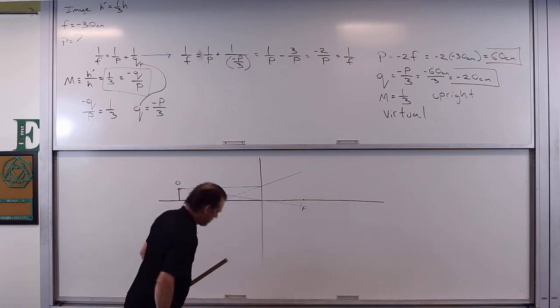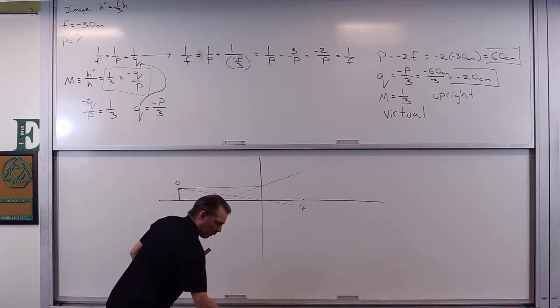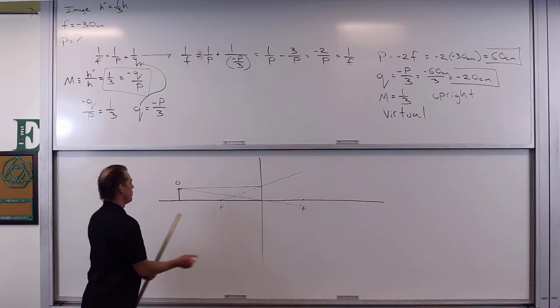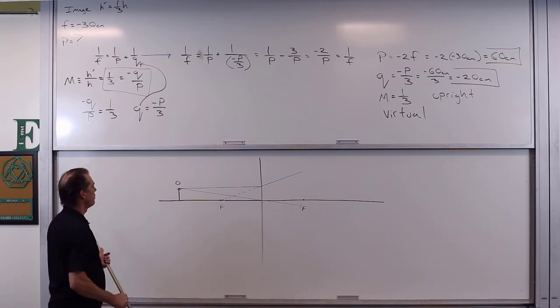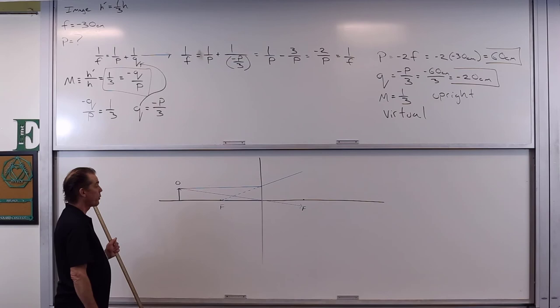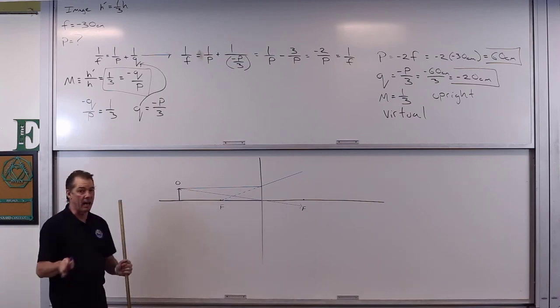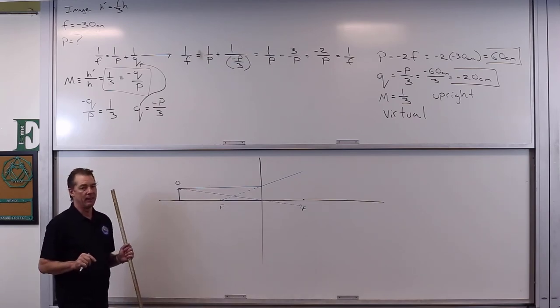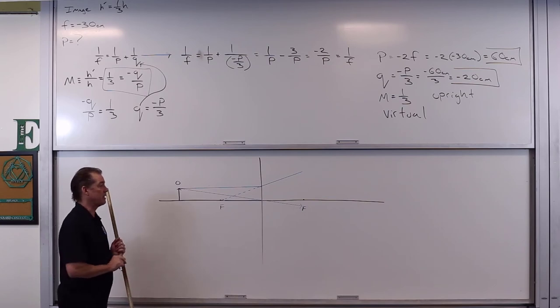Three rays for a proper ray diagram. So we do the third ray. What does this third ray do? The third ray goes through or is aligned with the other focal point and then refracts parallel to the principal axis. This is the one that you've got to be a little bit careful with.